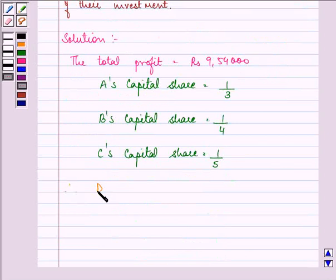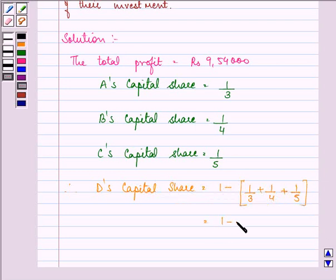So we can easily find out D's capital share that is by subtracting their sum, that is 1 by 3 plus 1 by 4 plus 1 by 5 from 1. This gives us 1 minus, taking the LCM, here we have 60.